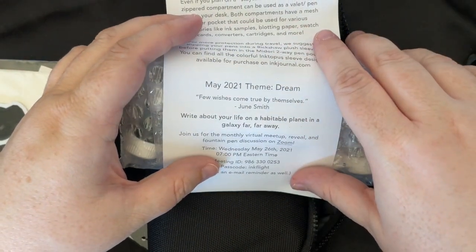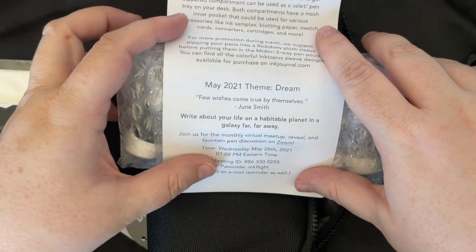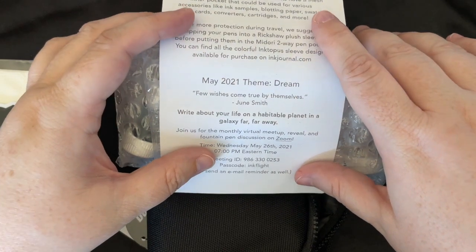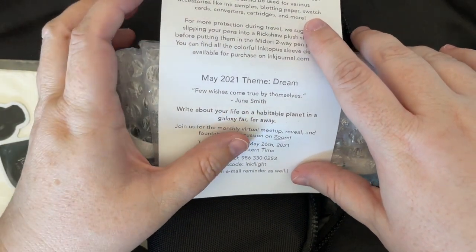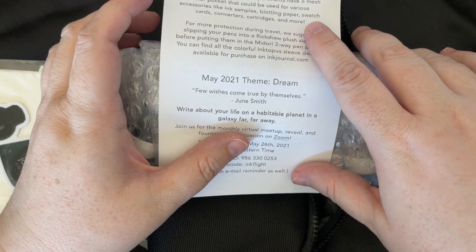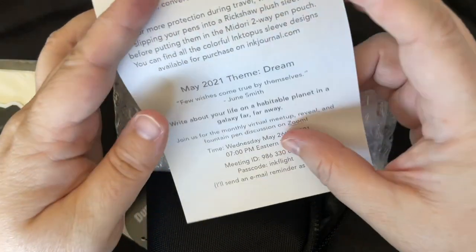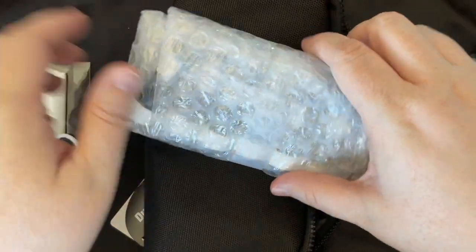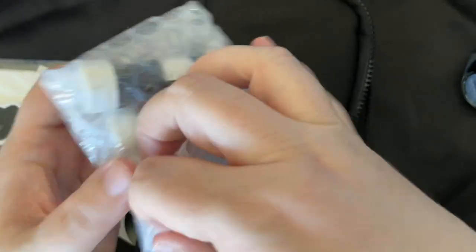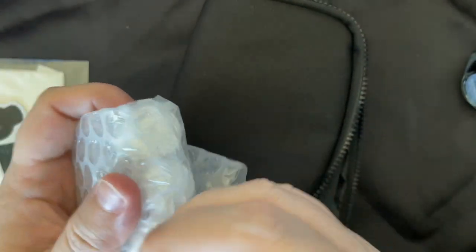May 2021 theme is dream. A few wishes come true by themselves. Write your galaxy, write about your life on a habitable planet in a galaxy far, far away. And then info about their zoom meeting. So cool, which I've never been able to make, but that's okay. So let's go ahead and see what we've got.